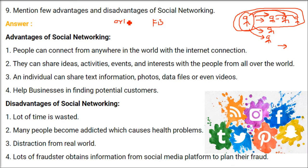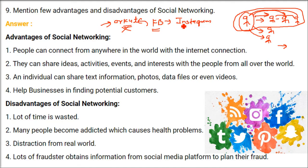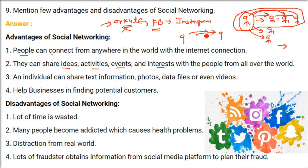Facebook actually changed things when it came. It all started with Orkut — everyone was finding their friends. But Facebook came and people who were with you 20 years back were also being found and friended. Then came Instagram and so many more. The advantage of social networking: people can connect from anywhere in the world with an internet connection — anytime, anywhere. Your friend may be in America or Australia; you can share your ideas, activities, events, and interests.